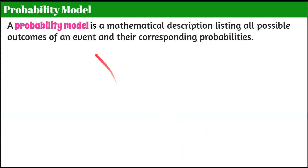We're going to start by understanding that a probability model is a mathematical description listing all possible outcomes of an event and their corresponding probabilities.